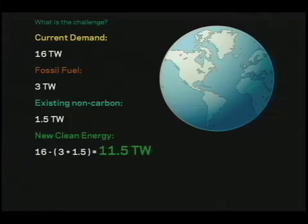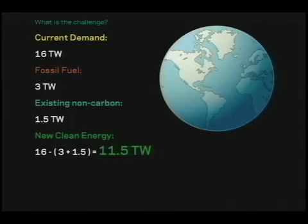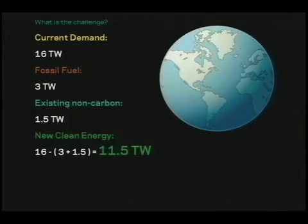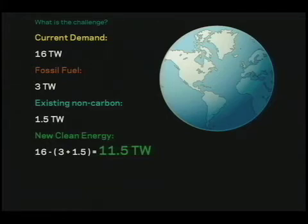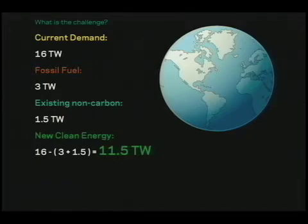Back to why we measure things in energy. Current demand measured by the International Energy Agency is 16 terawatts. If you wanted to solve for climate change and choose a target of 450 parts per million — that's not a great outcome, it will mean two degrees temperature increase — you can only burn three terawatts worth of fossil fuels in 25 years' time. We already get about one and a half terawatts from existing nuclear and hydro. So: take current demand, subtract the amount of power we can get from fossil fuels, subtract the existing stuff — we need 11.5 terawatts of new energy in 25 years.